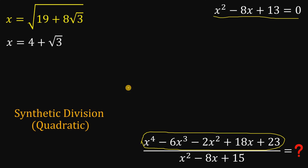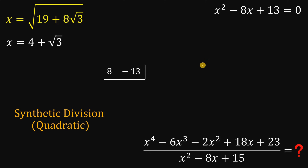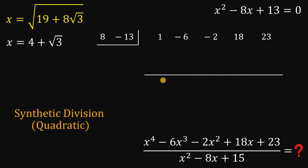Our divisor is quadratic, so let's set it up. From the divisor, we get x squared equals 8x minus 13. We set up a half-box with 8 and negative 13. Then we write the coefficients of the numerator: 1, negative 6, negative 2, positive 18, and positive 23, with a bar line for the quadratic synthetic division.